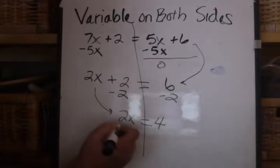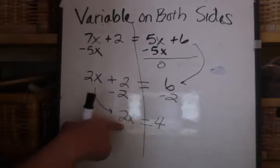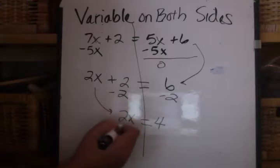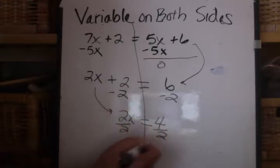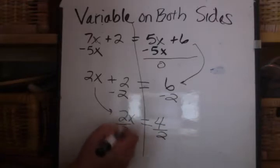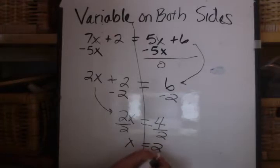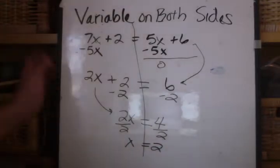And then I divide. This is being multiplied by 2. The variable is being multiplied by 2. The inverse operation is division. So, I divide 2. And 2 over 2 is 1. 1 times x is x equals 2. And that's my answer. x equals 2.